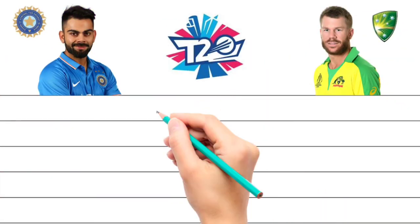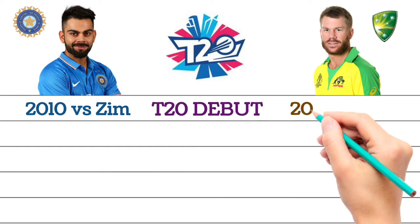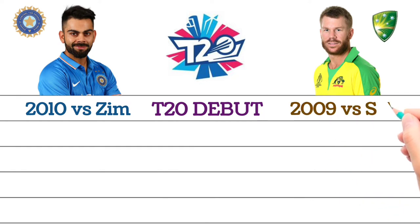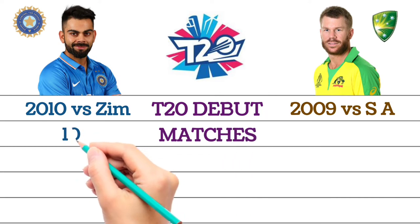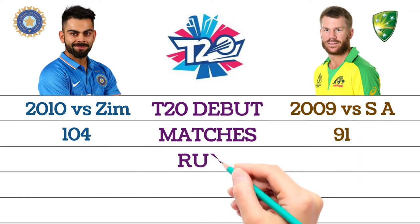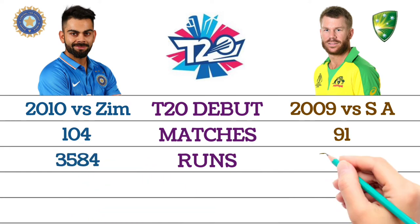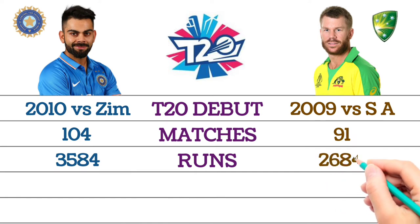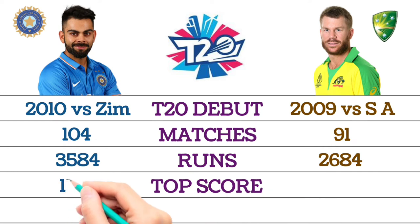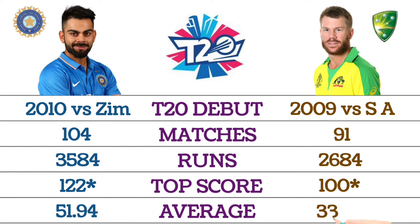T20 career — T20 debut: Virat Kohli debuted against Zimbabwe in 2010, David Warner debuted against South Africa in 2009. Total matches: Virat Kohli 104 matches, David Warner 91 matches. Total runs: Virat Kohli 3,584 runs, David Warner 2,684 runs. Top score: Virat Kohli 122 not out, David Warner 100 not out. Average: Virat Kohli 51.94, David Warner 33.55.